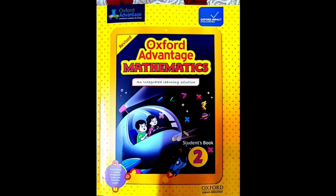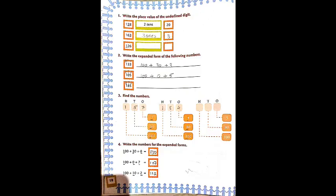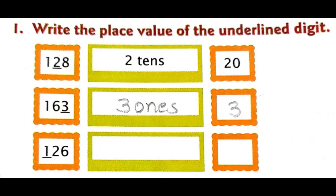Are you ready with your math book, pencil and eraser children? Now look at the screen. All of you open page number 18. The first question we have is: write the place value of the underlined digit.